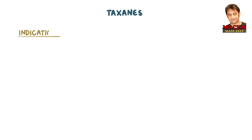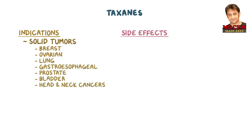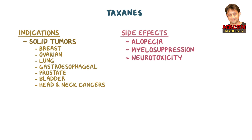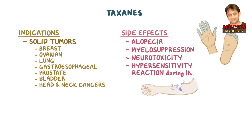Taxanes are used for a variety of solid tumors including breast, ovarian, lung, gastroesophageal, prostate, bladder, and head and neck cancers. Side effects include alopecia, myelosuppression, and neurotoxicity, which again presents as a glove and stocking peripheral neuropathy. They are also associated with a possible hypersensitivity reaction during infusion.